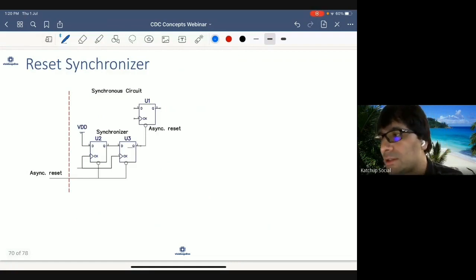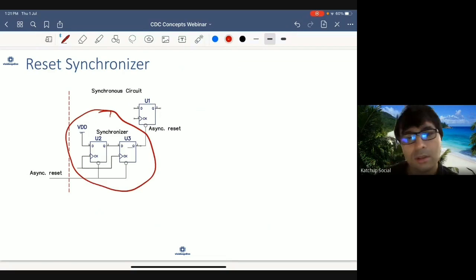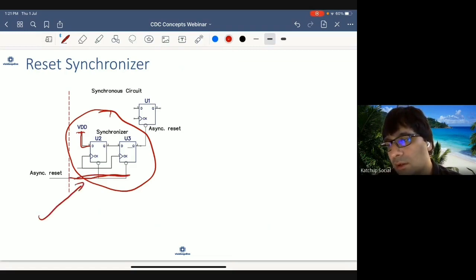It is done by adding a reset synchronizer. So this is a typical circuit of a reset synchronizer. If you see, the difference between a reset synchronizer and a normal synchronizer is that your D input of the synchronizer is connected to constant. And you are basically synchronizing this reset. Once you synchronize it, output is fed to your destination clock.